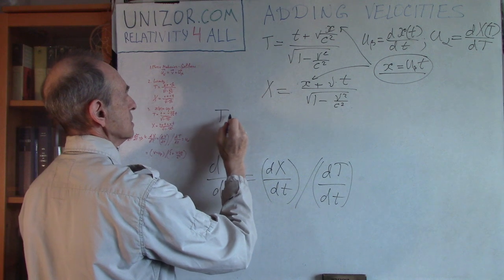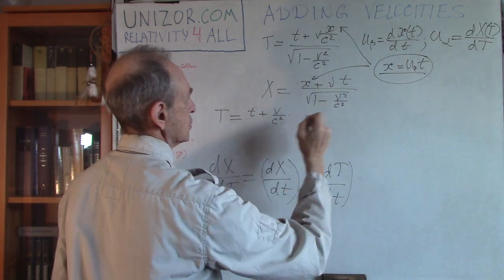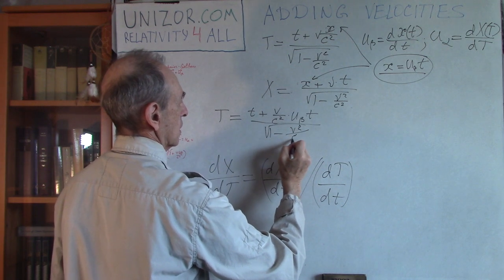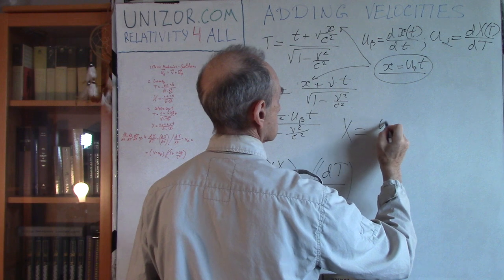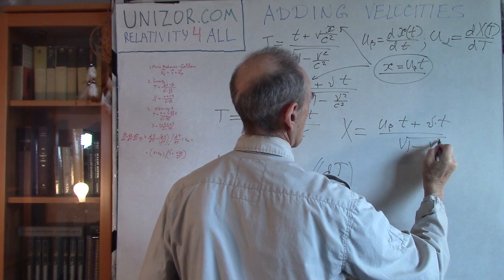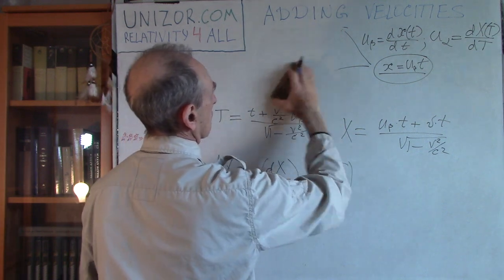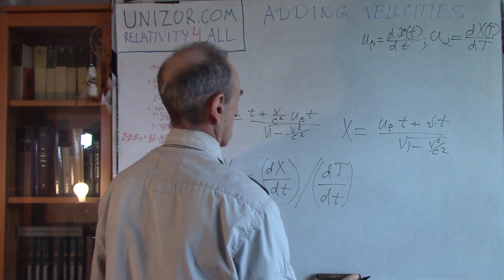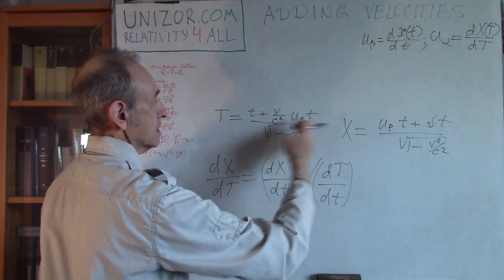My T is equal to (t + v/c² times x) which is u_beta*t, divided by square root of 1 minus v²/c². My X is, substitute this one, instead of x it's (u_beta*t + v*t) divided by the same square root. So now all we have to do is differentiate this, differentiate this by t and these are linear functions.